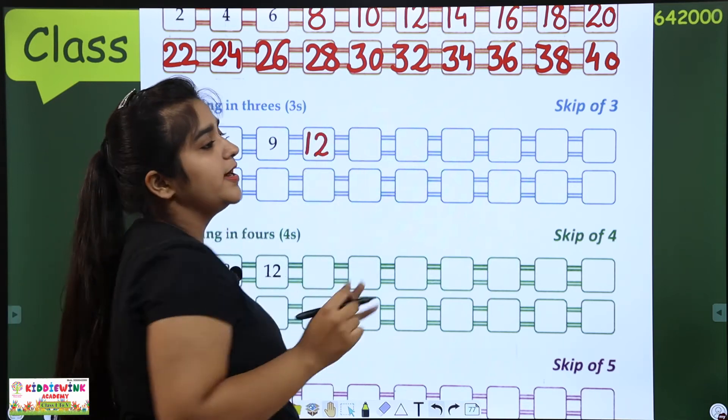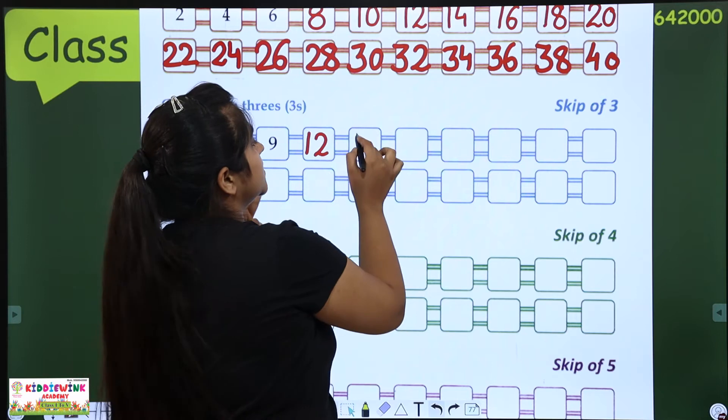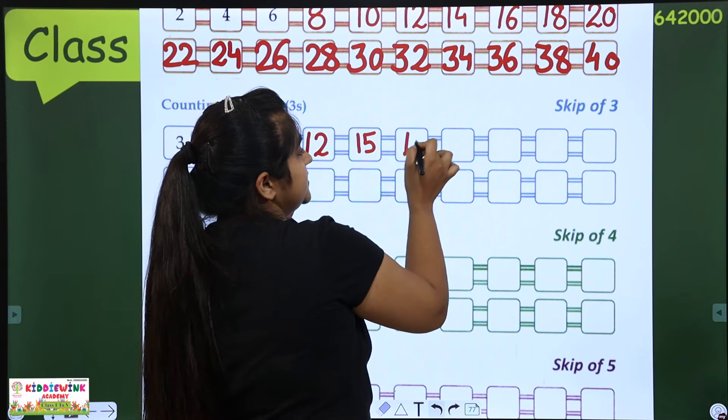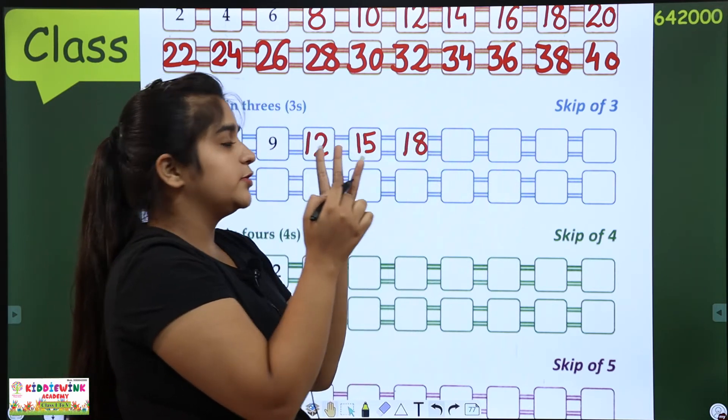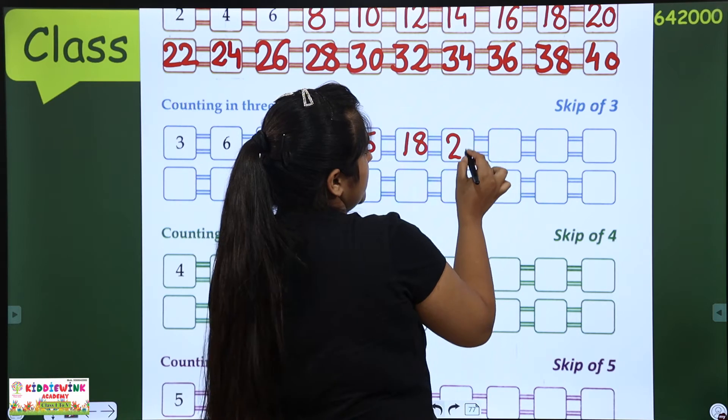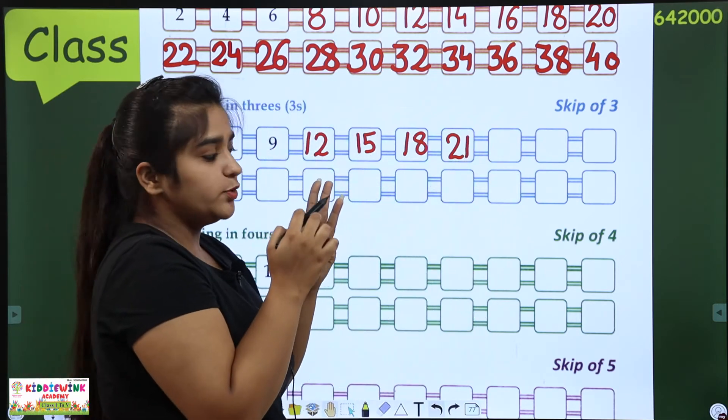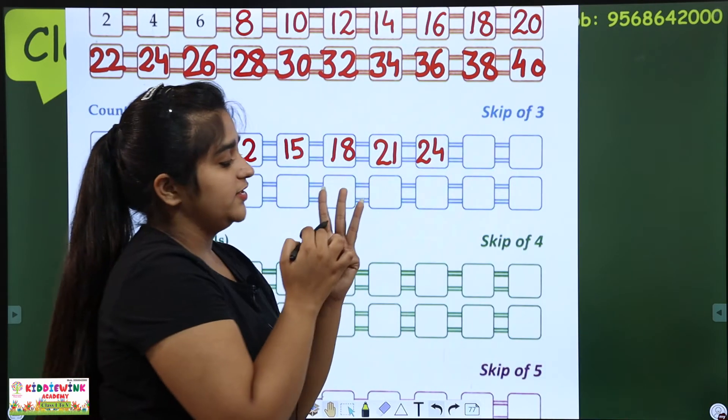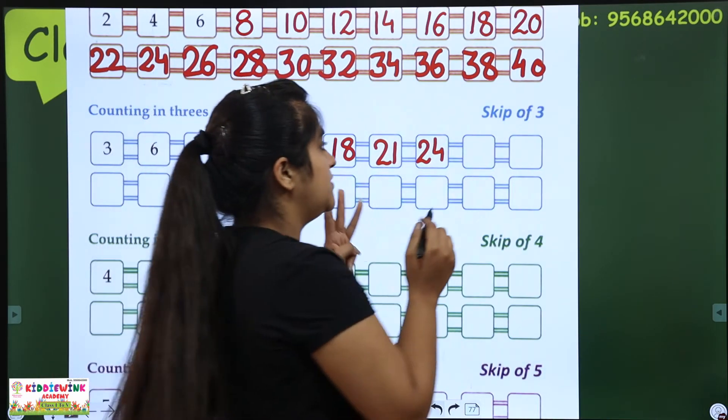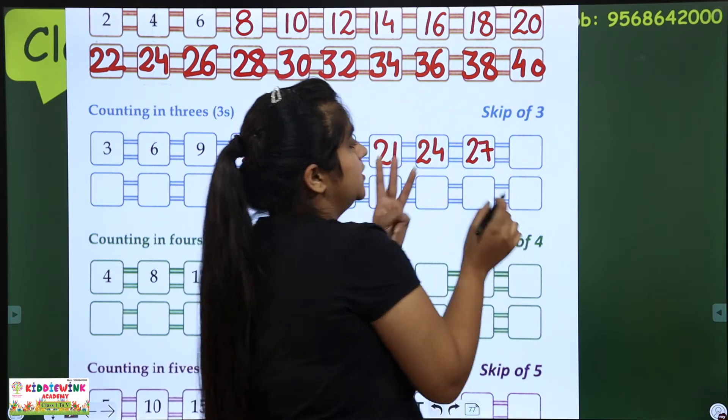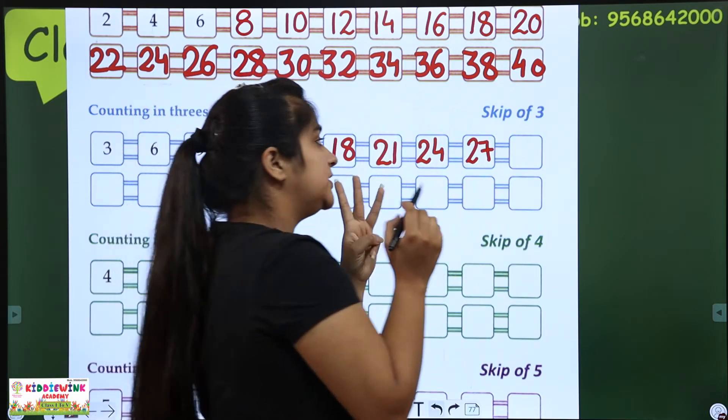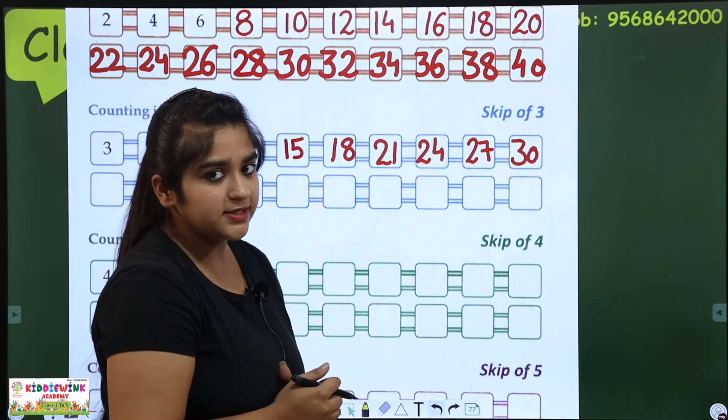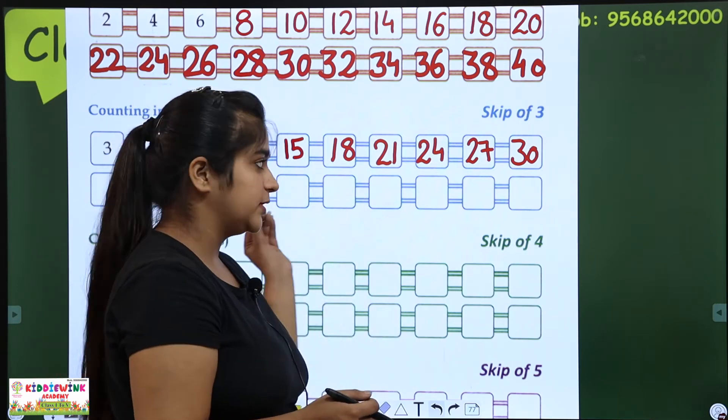Now I will show you a little bit, then you will complete it. Okay, so we have to take 3-gap now, 4-count. So we will open 4 fingers and count with the gap. 4, 5, 6, 7, 8, 8. 9, 10, 11, 12, 12. 13, 14, 15, 16, 16.